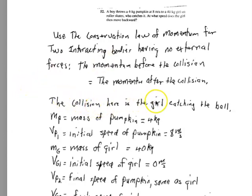So the collision in this case is a coupling phenomena. The collision is when she catches the pumpkin. So I create some symbols here. So I choose to use mp for the mass of the pumpkin. That's 4 kilograms. I'm talking about catching the pumpkin. So change this word to pumpkin. Okay.